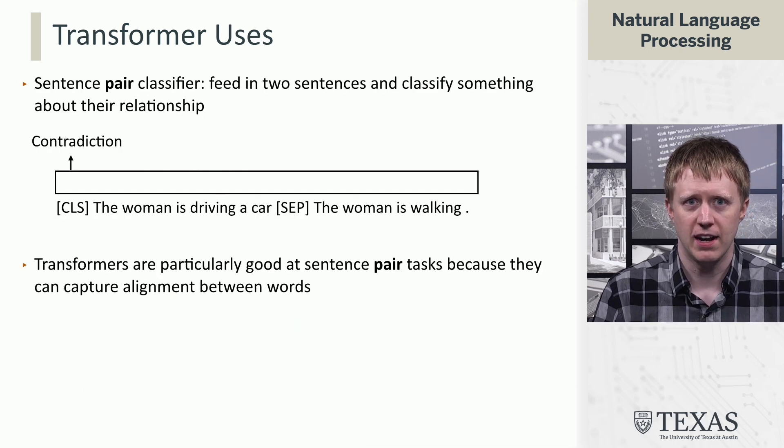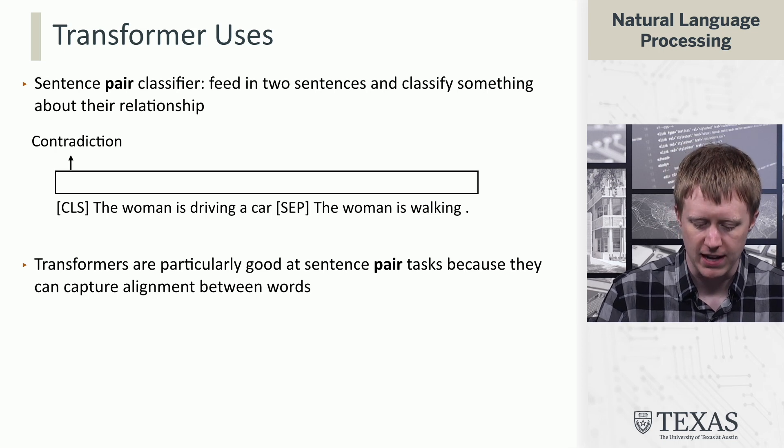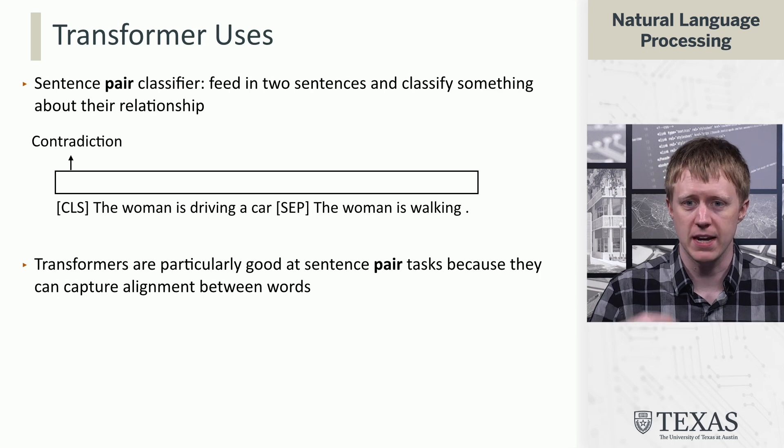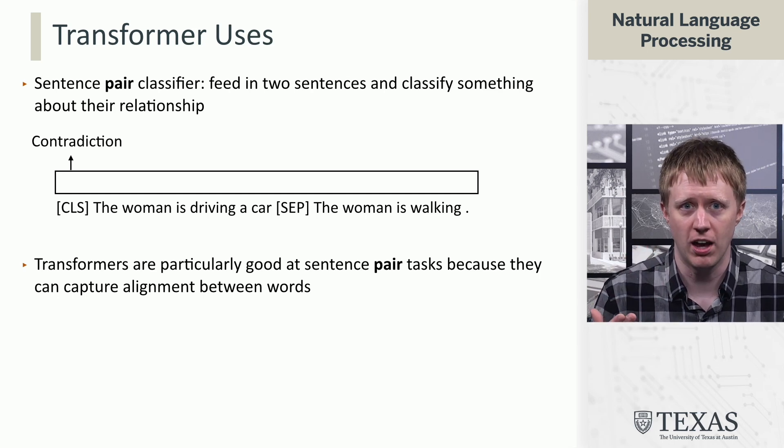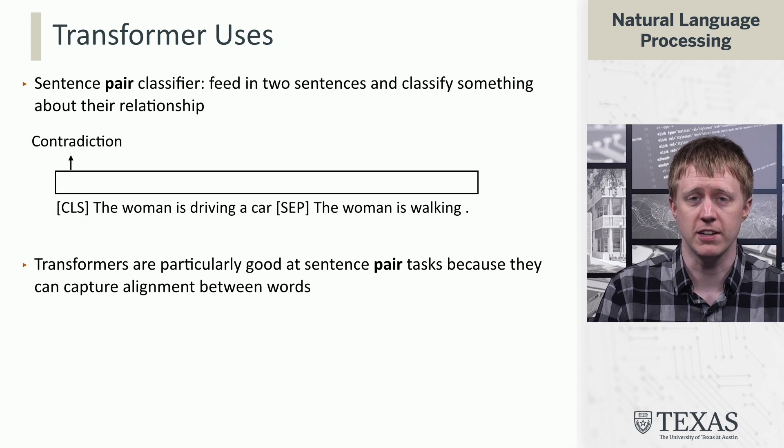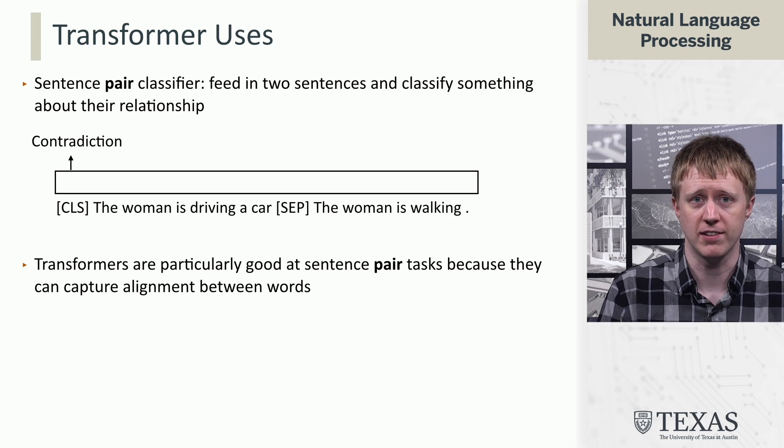A final thing that transformers have proven to be really effective at is sentence pair classification. One of the big highlight results of the initial BERT pre-trained model was its ability to do tasks like this textual entailment tasks that we see here.